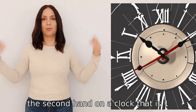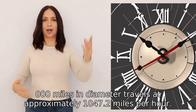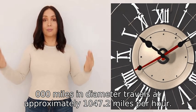Therefore, the second hand on a clock that is 1,200,000 miles in diameter travels at approximately 1,047.2 miles per hour.